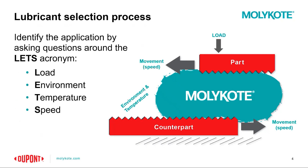When it comes to selecting a lubricant, we lean heavily on the LETS acronym — load, environment, temperature, and speed. These are four things we really need to know in order to spec in the correct lubricant for the application. As you can see in this image, we have the part and the counterpart, and between them you have your lubricant — in this case, our Mollie Coat.